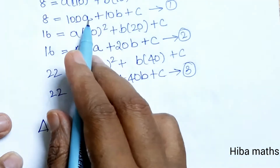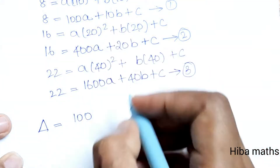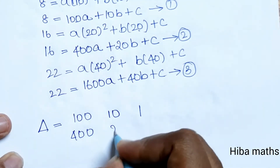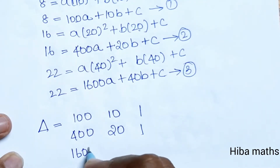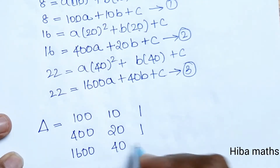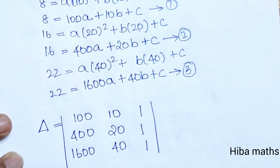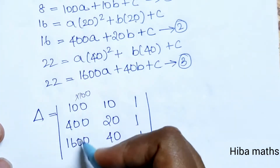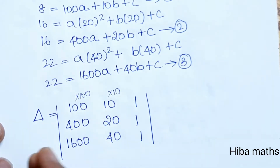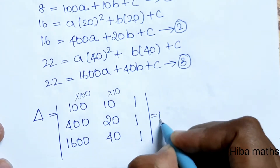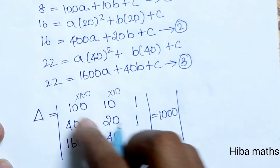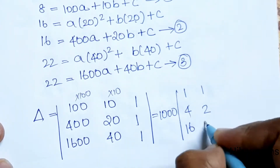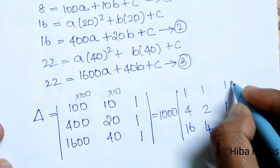The determinant is set up with the coefficient matrix: first row [100, 10, 1], second row [400, 20, 1], third row [1600, 40, 1]. We take common factors — 100 from column 1 and 10 from column 2 — giving a common factor of 1000. The reduced matrix becomes: [1, 1, 1], [4, 2, 1], [16, 4, 1].